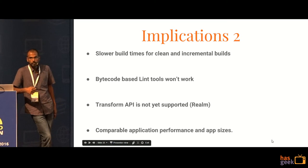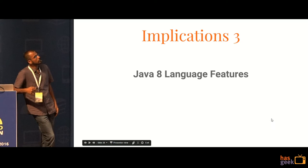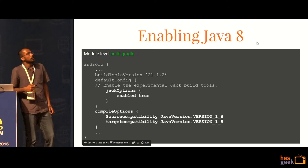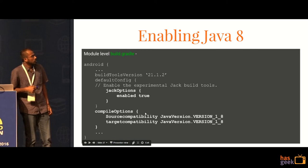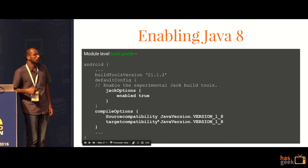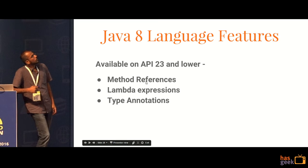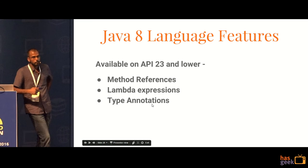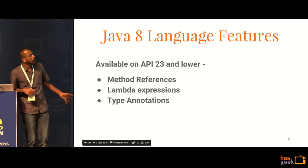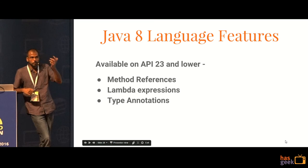Application performance and app sizes are comparable — there was no real difference. The big thing, like I said, that you get is Java 8 language features. In order to use the Java 8 language features, you have to add a couple of lines in your Gradle build file: source compatibility and target compatibility, essentially setting it to Java version 1.8. If you're using API 23 or lower, you get method references, lambda expressions, and type annotations. We'll focus on lambda expressions and method references because those are the major positives.